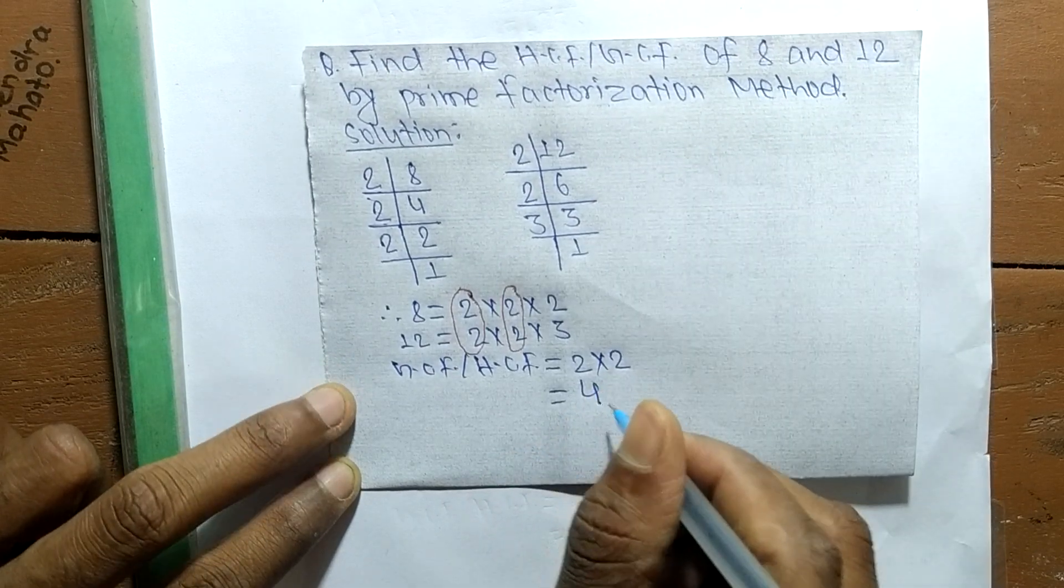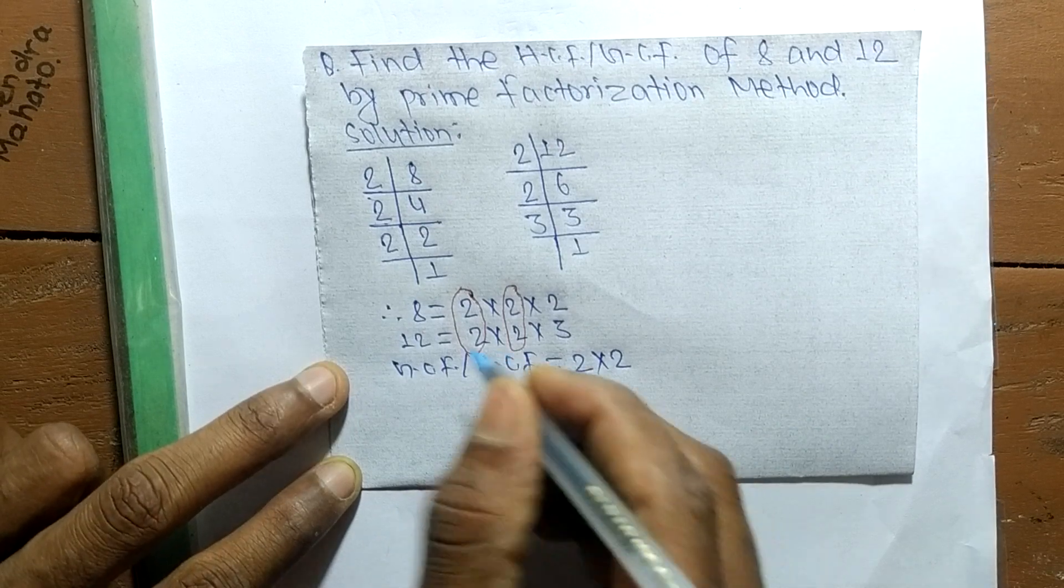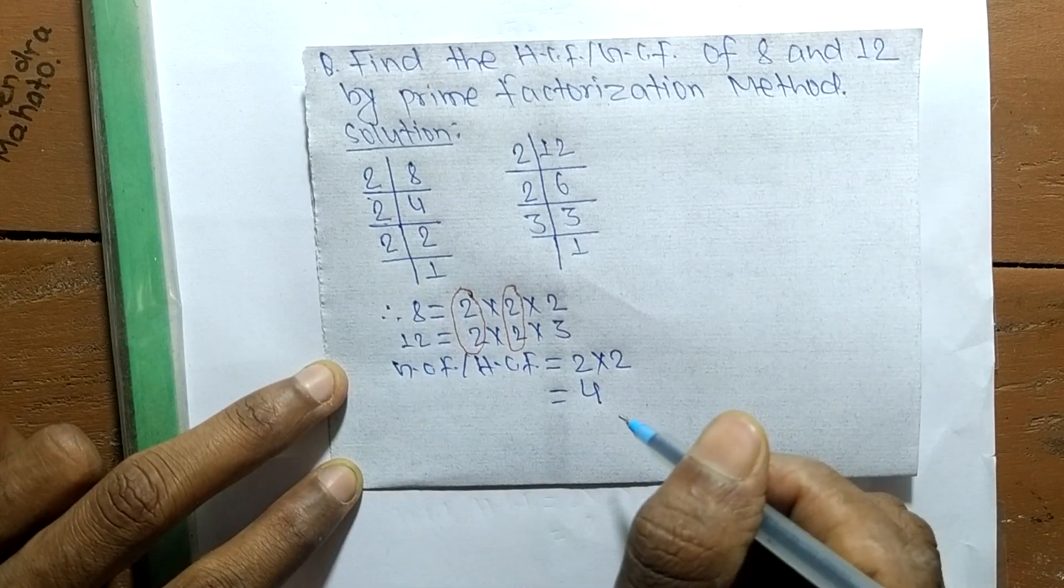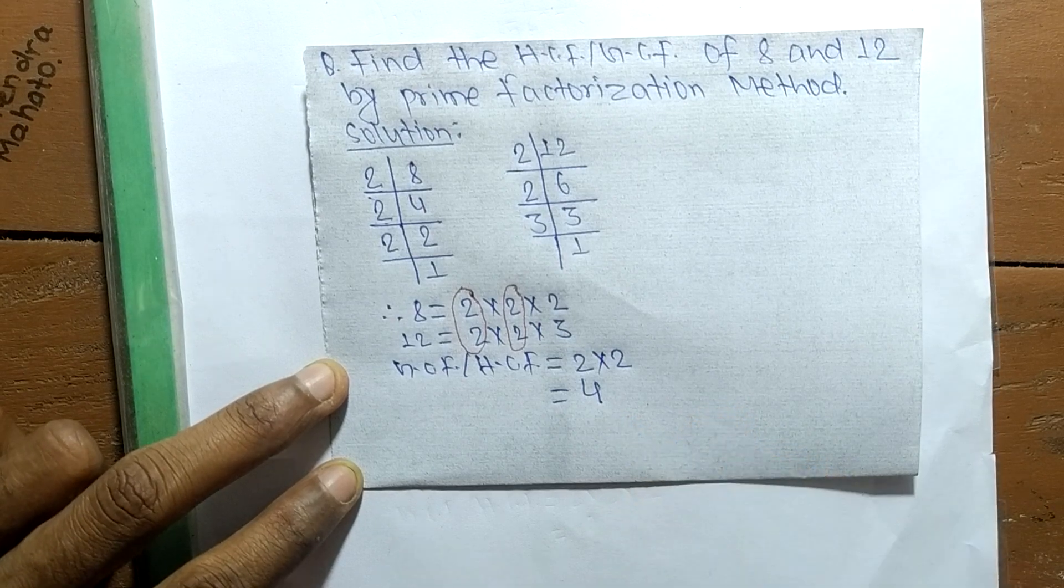So 4 is the GCF or HCF of 8 and 12. That's all for today, thanks for watching.